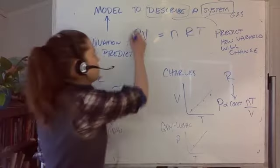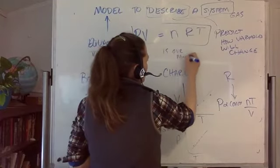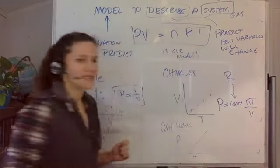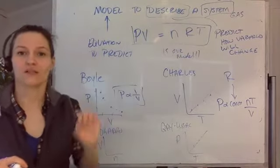Okay. So PV equals nRT. This is our model. Yay. And we are going to use this to understand the laws of thermodynamics.